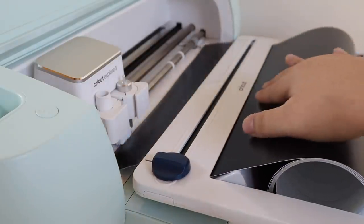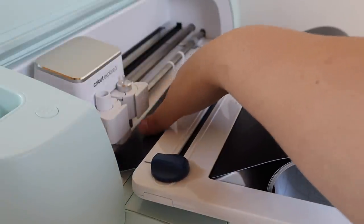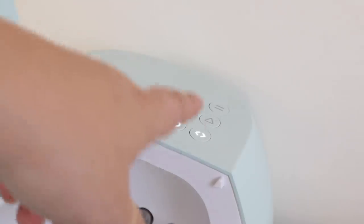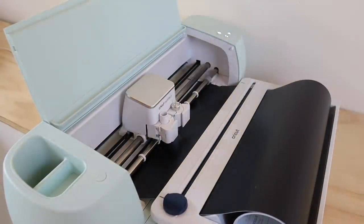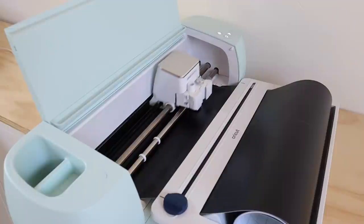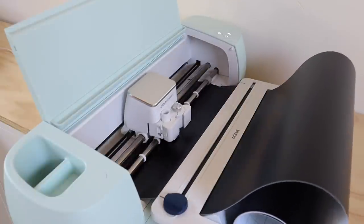When loading your vinyl, make sure that your vinyl falls under those teeth, and then you can go ahead and press the load button. This will make sure that you have enough vinyl in your Cricut to do your project. Then you can press play and watch all the fun begin.